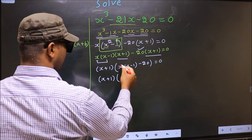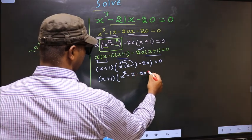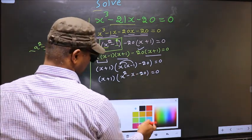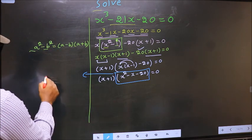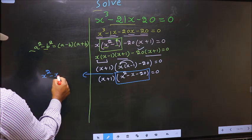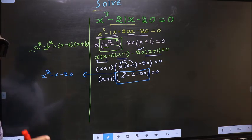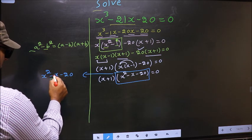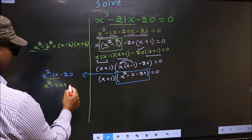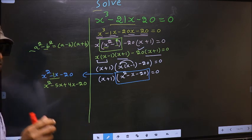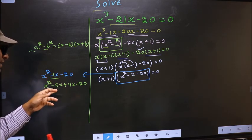Now with x + 1 factored out, we open up the remaining brackets to get x² - x - 20 = 0. Now we got a quadratic. To factorize this quadratic we should split the middle term, that is -1x. So in place of -1x I write -5x + 4x, giving x² - 5x + 4x - 20.